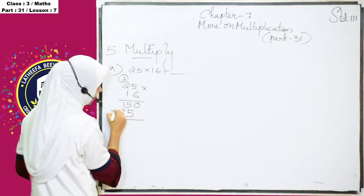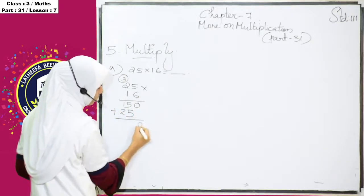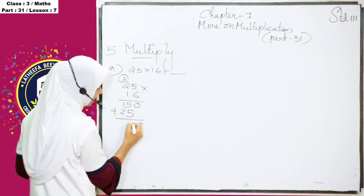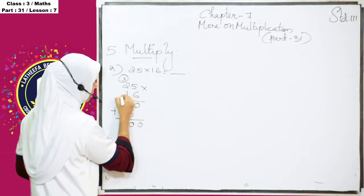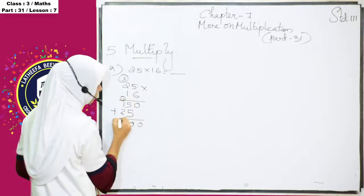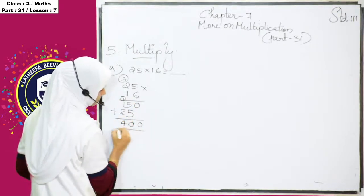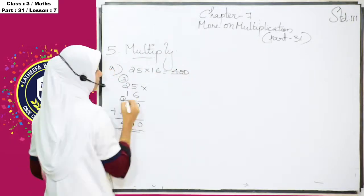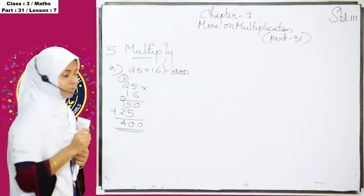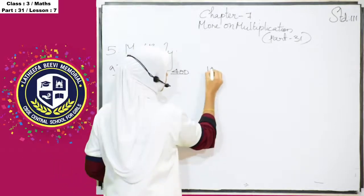So, then we have to add these two numbers, 0, 5 plus 5 is 10, 0, 1 is carry over, 2 plus 1, 3 plus 1, 4. So, its answer is 400. Then we are moving to the next one.